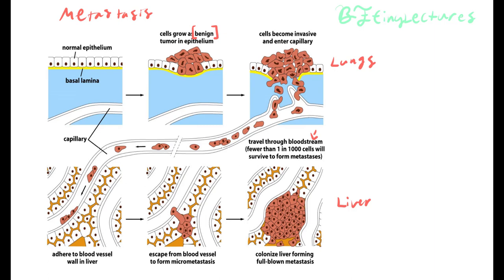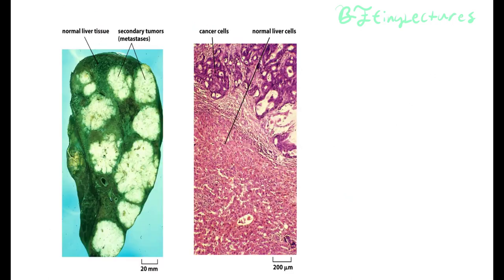The cancer can go into the blood vessels, and here we have the cancer going into the liver and starting to make a new colony. Here we have a liver tissue where the green tissue is normal tissue, but the section in blue is the new tumor — and this tumor initially was not in the liver. This is called a secondary tumor. Secondary tumors are tumors that have formed from metastasis.